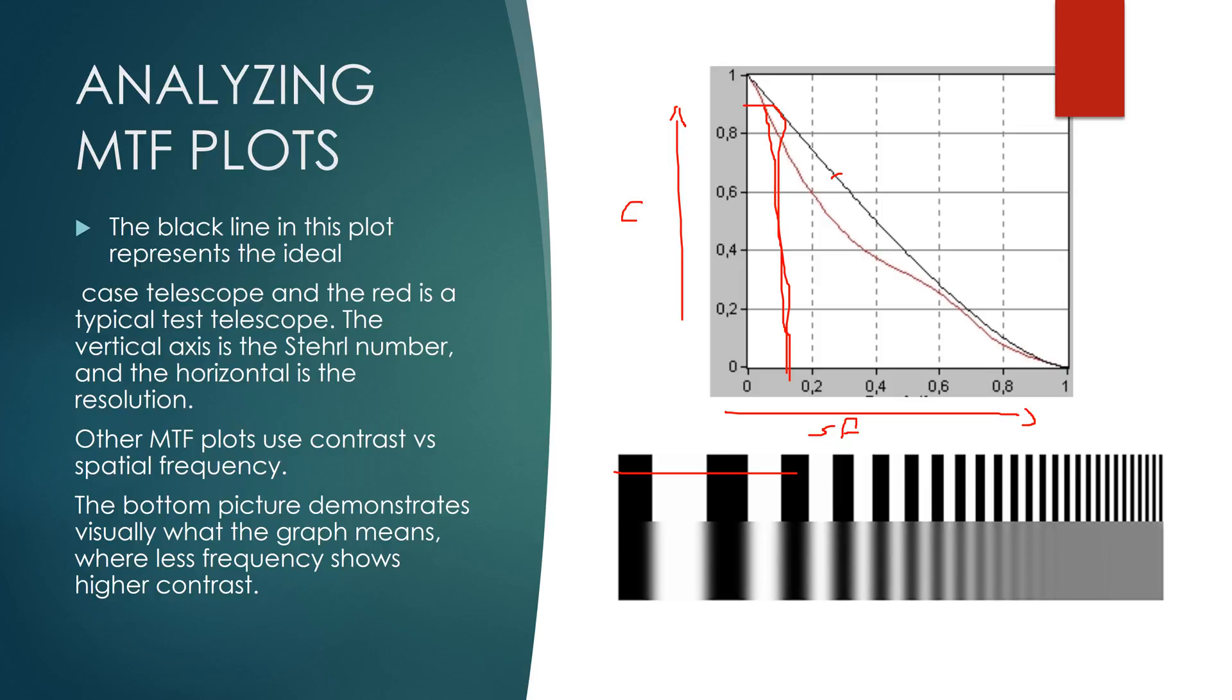When you go down here you can see that the spatial frequency gets higher because you have more bars per distance. And if you can see the bottom half of this scale you can see that the contrast goes down between the whites and the blacks. This would amount to some point around here in the graph.